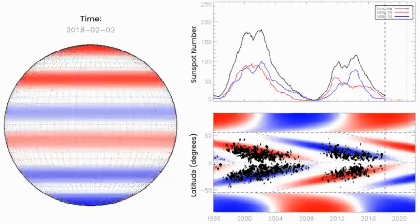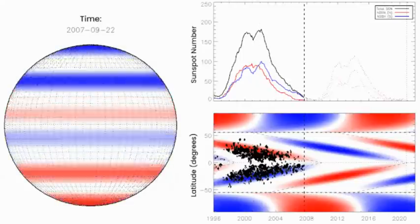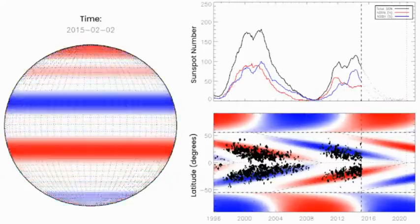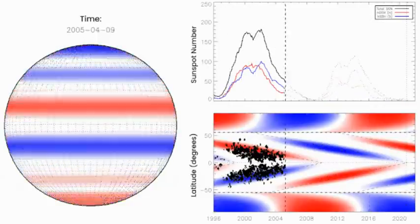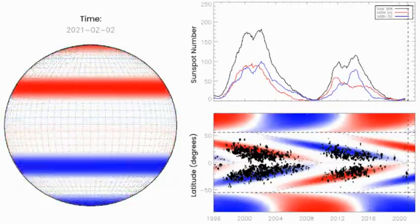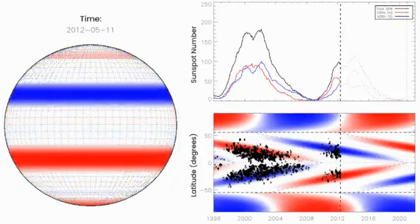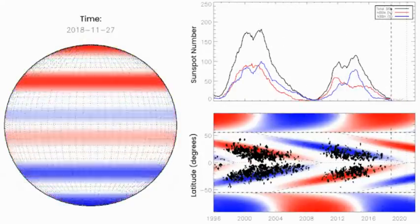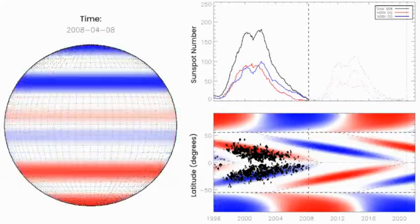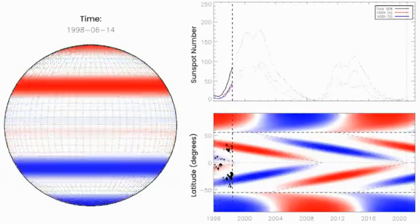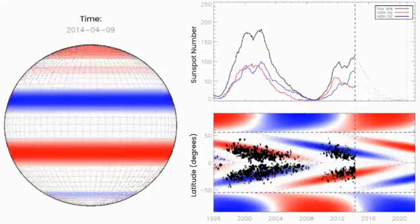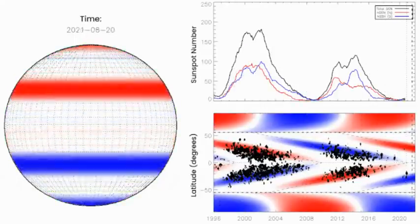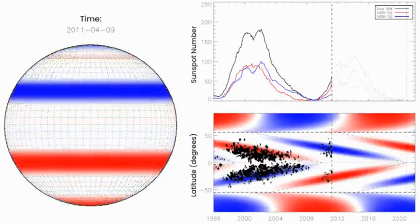A great example from the research is Sunspot Cycle 4, which began with a terminator in 1786 and ended with a terminator in 1801 - an unprecedented 15 years later. The following Cycle 5 was incredibly weak with a peak amplitude of just 82 sunspots. That cycle would become known as the beginning of the Dalton Grand Solar Minimum.